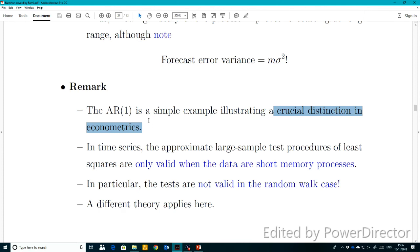An autoregressive AR(1) is a simple example illustrating the crucial distinction in econometrics because it exhibits this random phenomenon, which we cannot really predict. The future is not easy to predict based on how the series really behaves—it's very random.